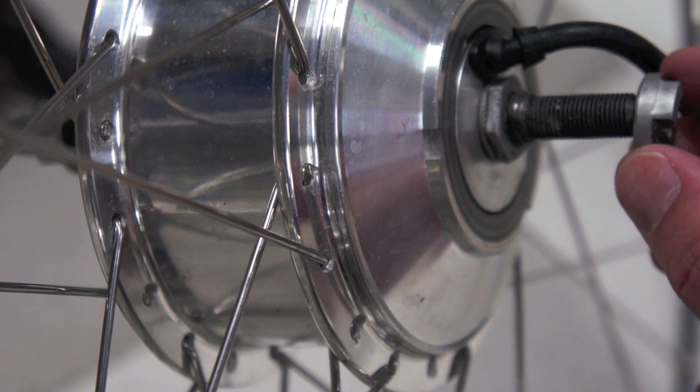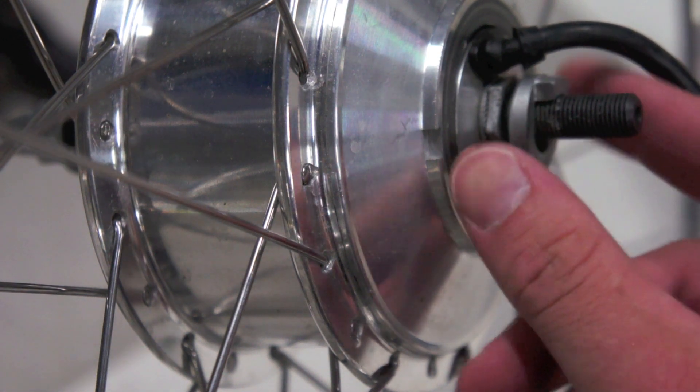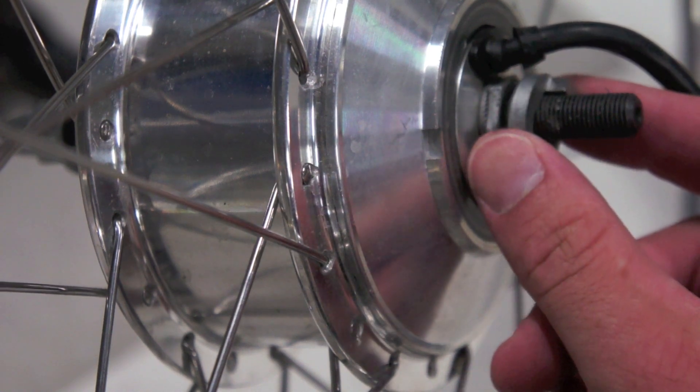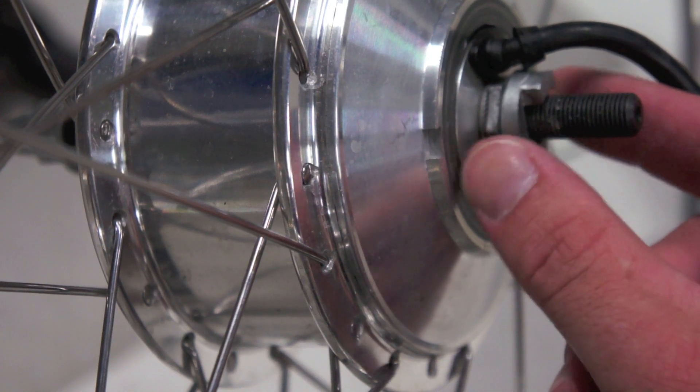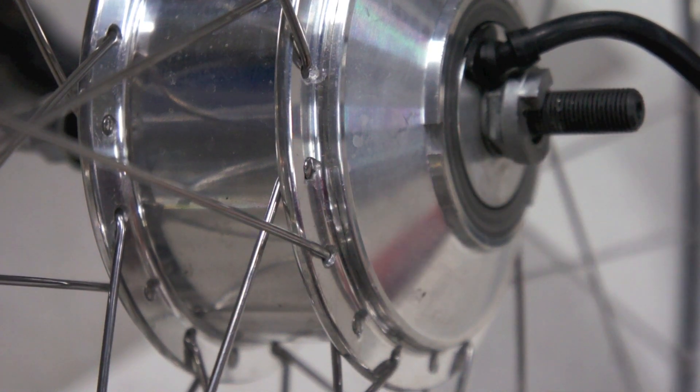Before you install the wheel with the hub motor onto your front forks, you need to place the tab washer over the axle and rotate it until it locks into place with the tab directly underneath the black cable that comes out of the hub motor. It will lock into place and will not move without you actually rotating the axle.